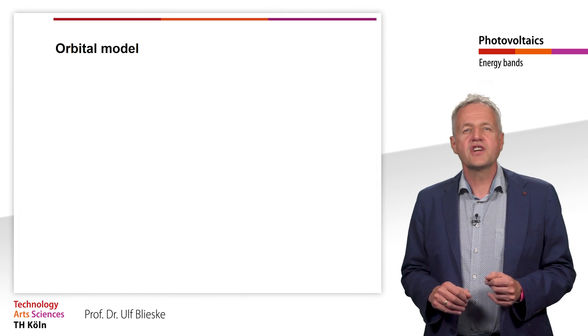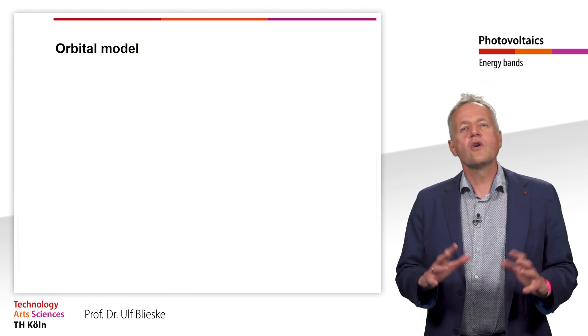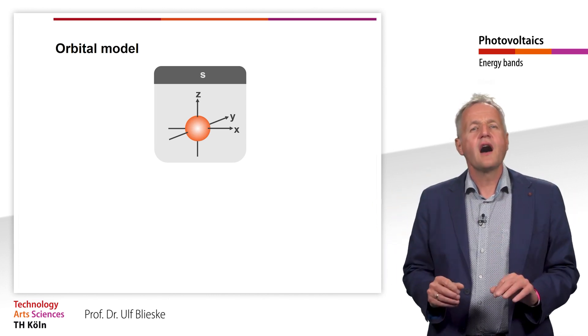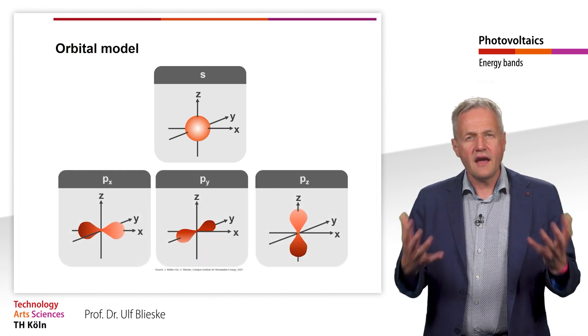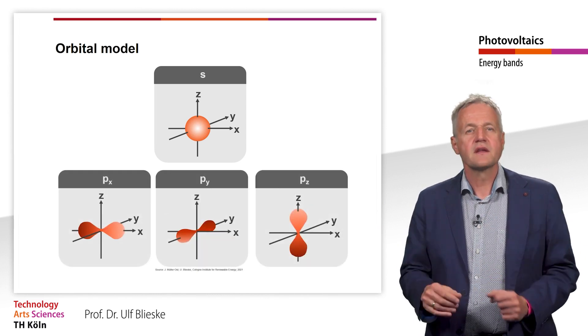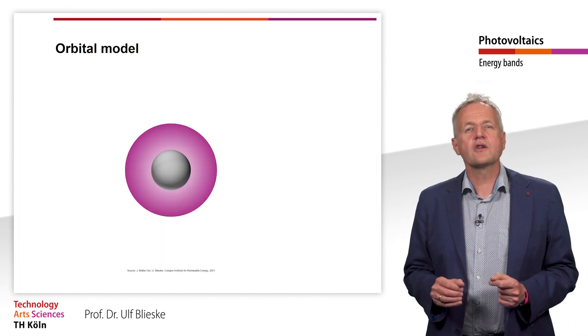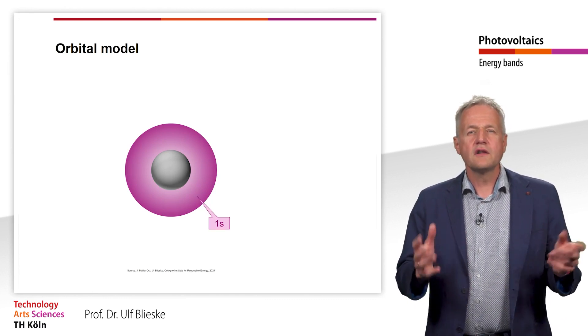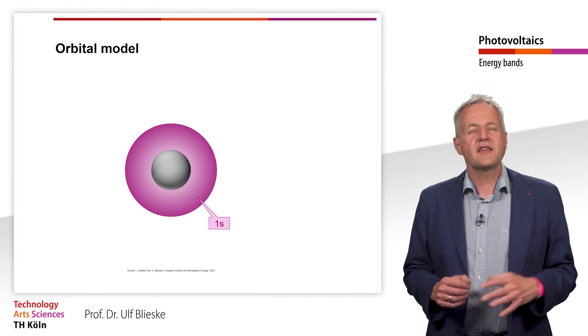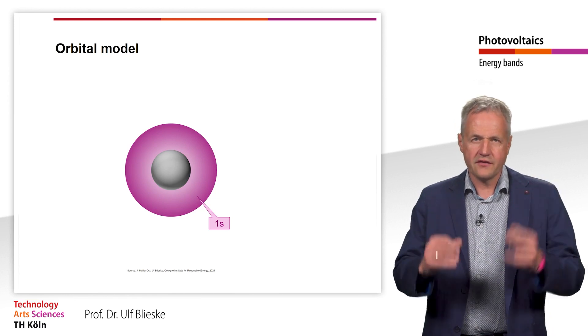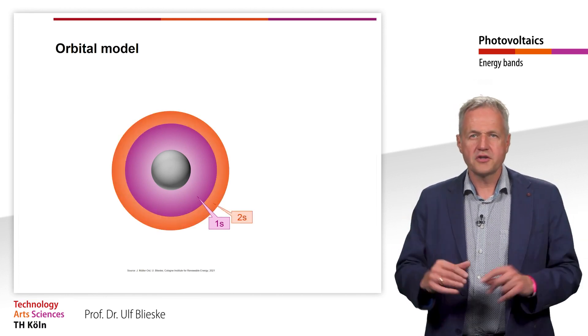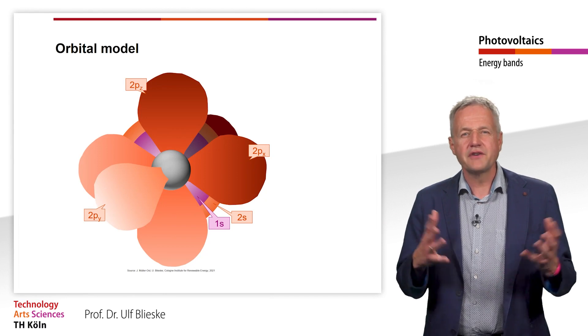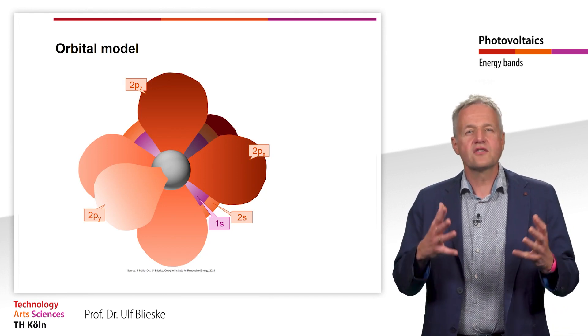The simplest orbital has the shape of a sphere. It is the so-called s orbital. For us, the double-shaped p orbitals are also important. They can have three different orientations. The first shell of Bohr's atom model corresponds to an s orbital in the orbital model. We call it the 1s orbital. The second shell consists of a 2s orbital and three p orbitals. The third shell is constructed in the same way as the second, but for the sake of clarity we no longer show it in the three-dimensional model.